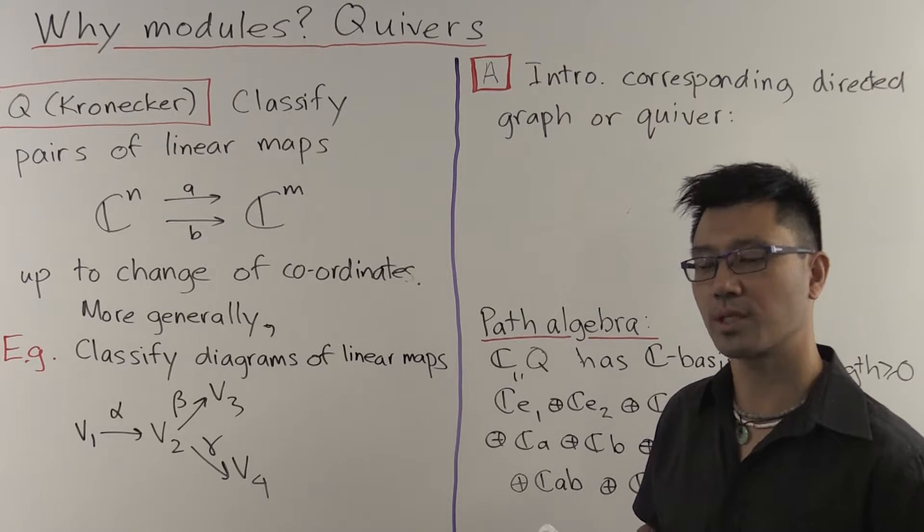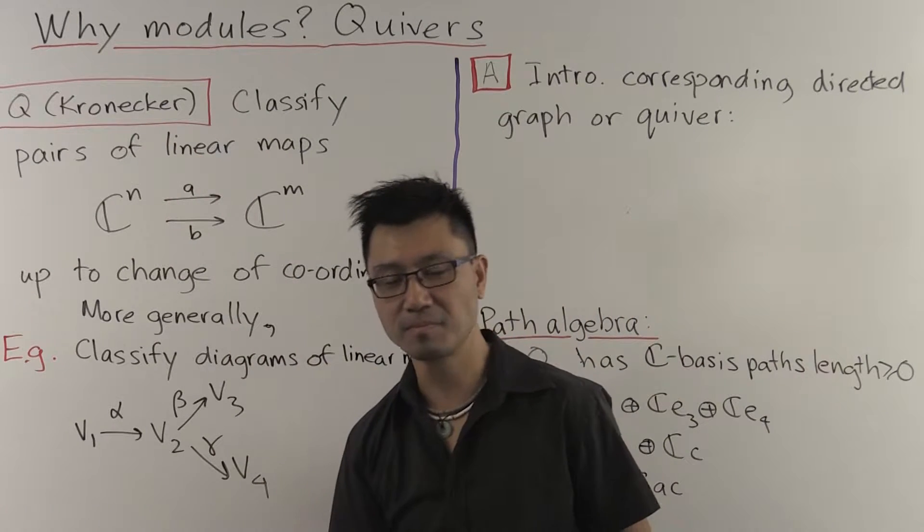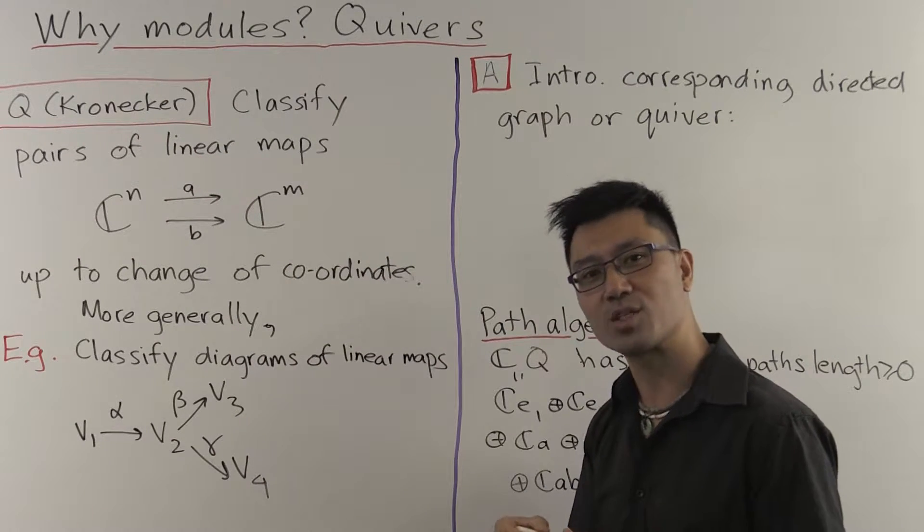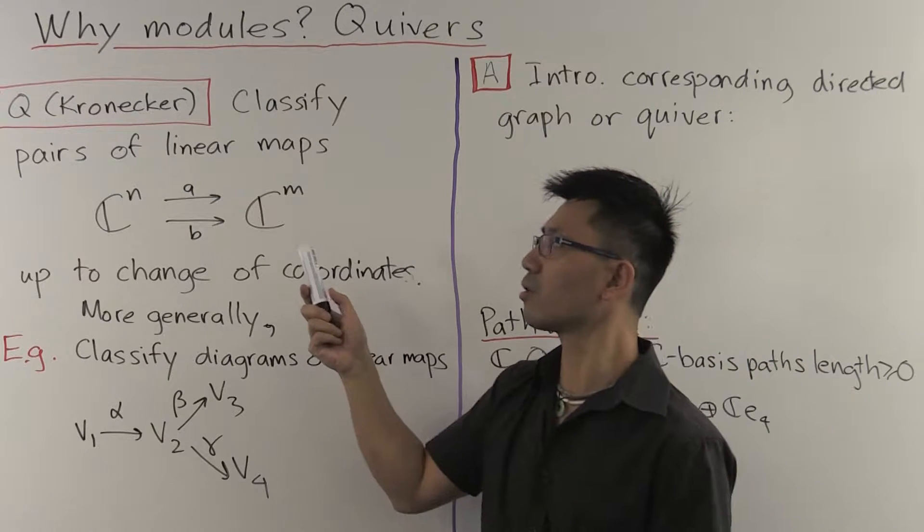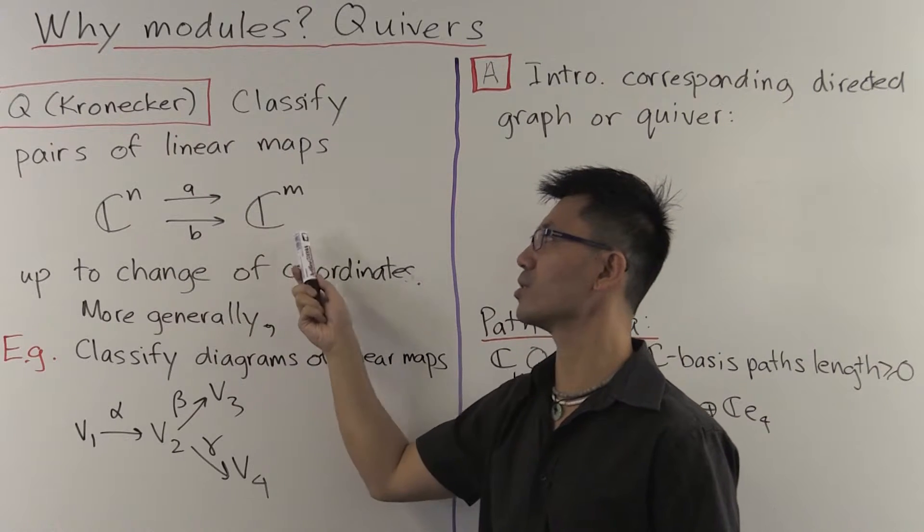To see how this works, we can look at a very old question that was due to Kronecker, which looks at the following situation. Kronecker considered two linear maps, A and B, from CN to CM.